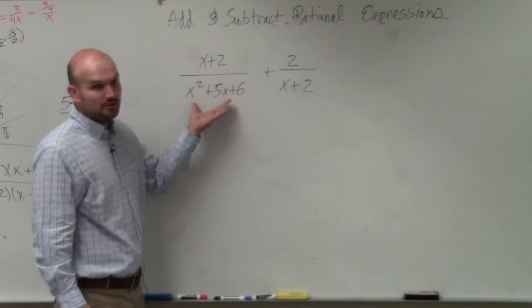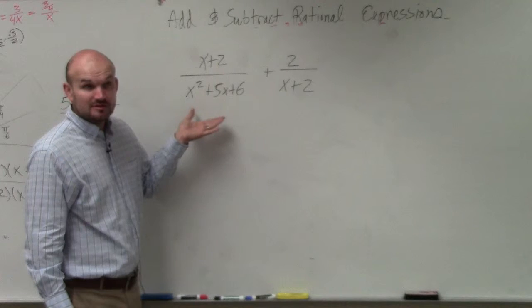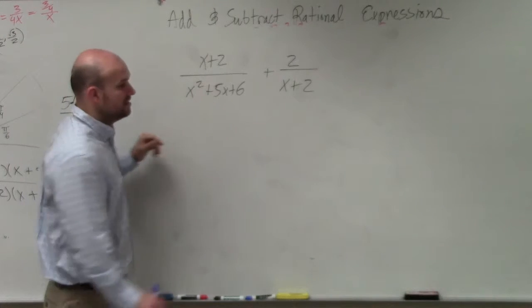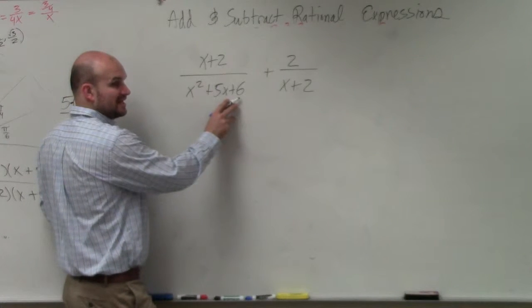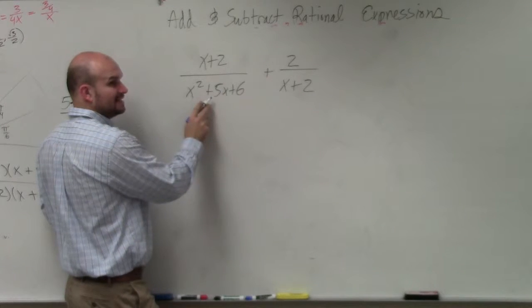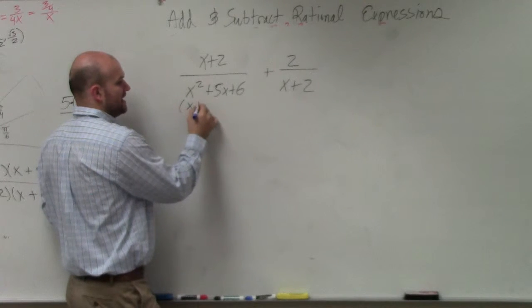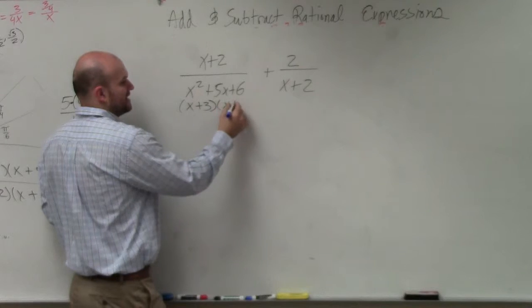So you guys see that we have a trinomial, right? So we should simplify this. What two numbers multiply to give you 6, but then add to give you 5? So it's x plus 3 times x plus 2.